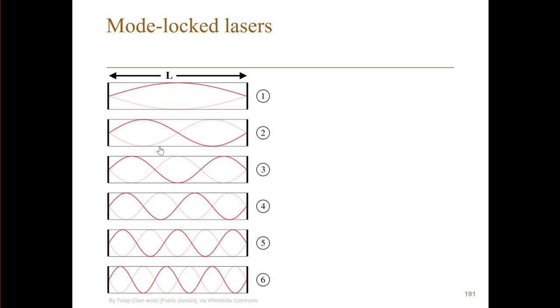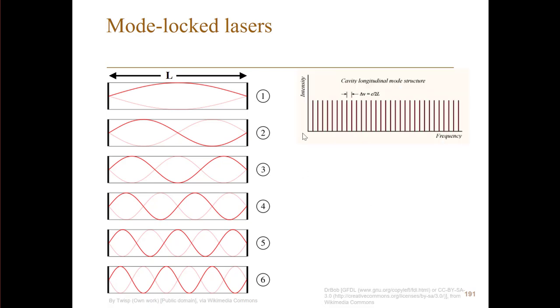So here I have another picture of these different modes. If I look at these different modes there's the first mode, second one, third one and so on, and the distance between them—they are all equidistant. So if we look in the frequency plane we have equidistant modes and the distance between them, delta nu, is c over 2L, where L is the length of the cavity.